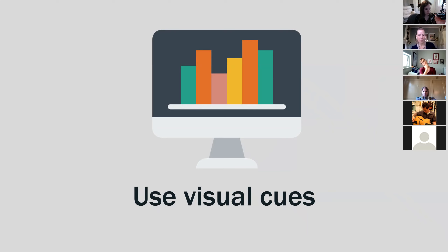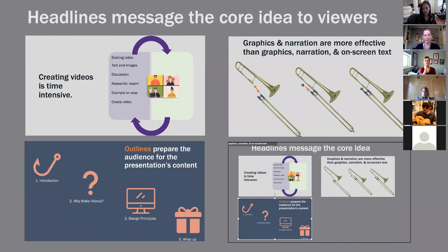Visual cues mean drawing your viewers' attention to whatever it is you want them to focus on. The first one is headlines — using headlines to message the core idea to viewers. You can think of this like a newspaper: newspaper titles often have a quick takeaway. Headlines are more active in tone and signal to the student what they should concentrate on in the slide. They also help you organize the slide because you want to have one headline per slide or per video, which helps break things into more manageable chunks.